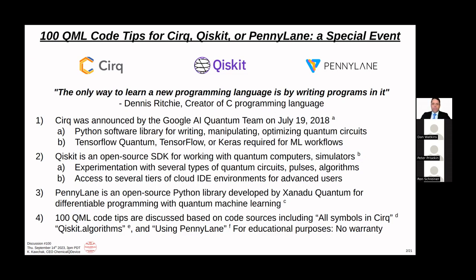CIRQ is a Python software library just for writing, manipulating, and optimizing quantum circuits. You can't do a lot of the ML workflows without TensorFlow or TensorFlow Quantum, or Keras, which you'll need in addition to the quantum circuits. Qiskit is perhaps the biggest of the bunch — it's an open source software development kit for working with quantum computers and simulators.